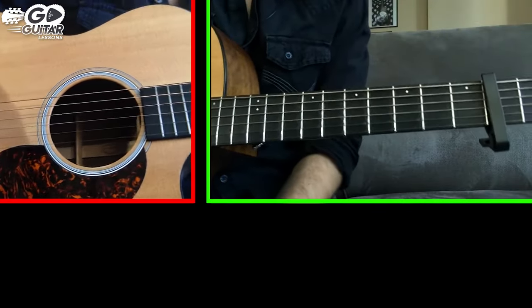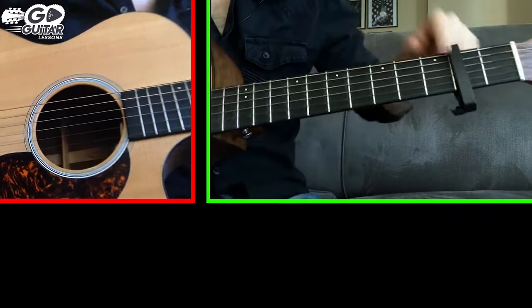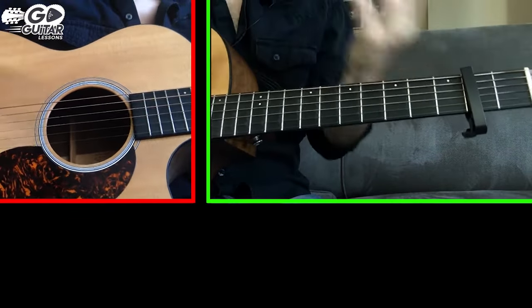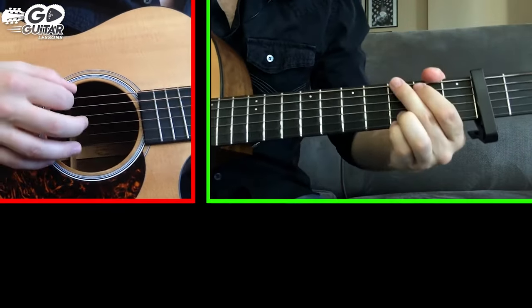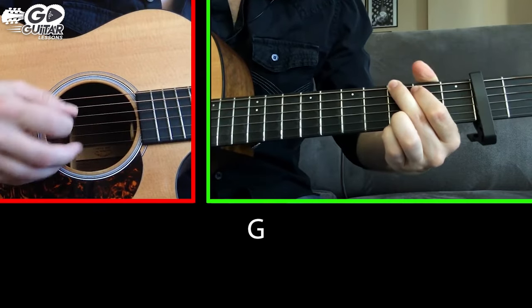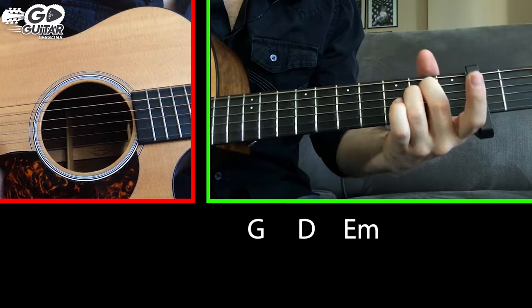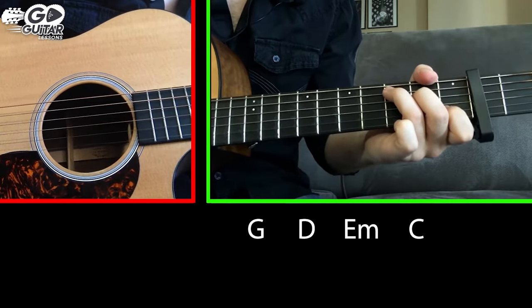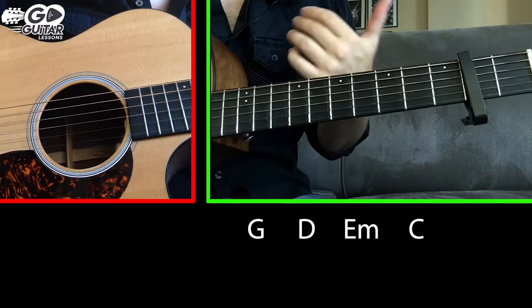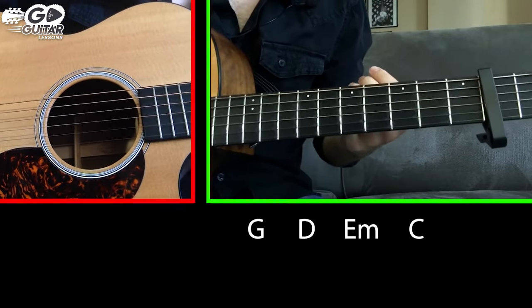So here's the breakdown for Wagon Wheel. You're gonna need to have a capo on the second fret and then we just have a bunch of basic chords. We're looking at a G chord, a D chord, an E minor chord, and a C chord. So those are the only four chords we're using for the song and there's two variations on the progression.